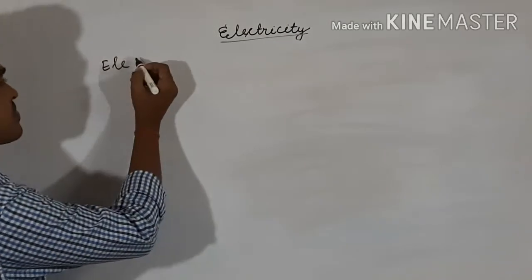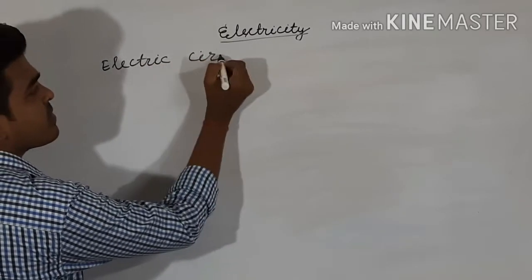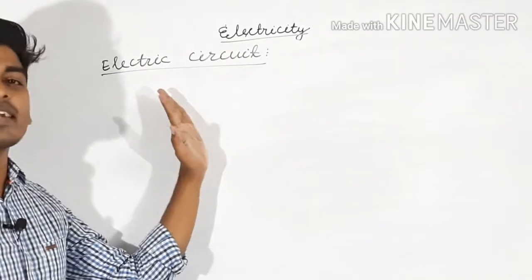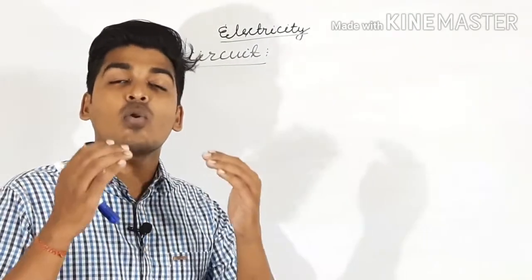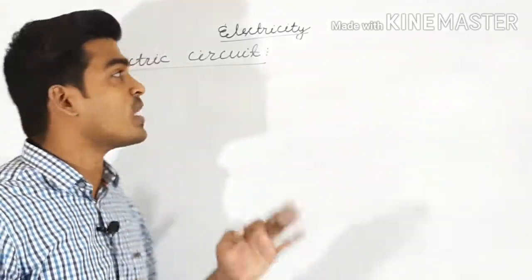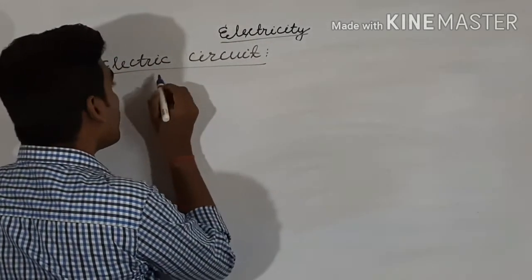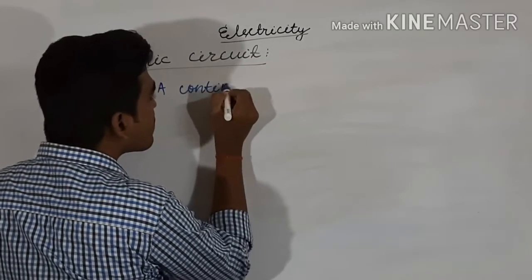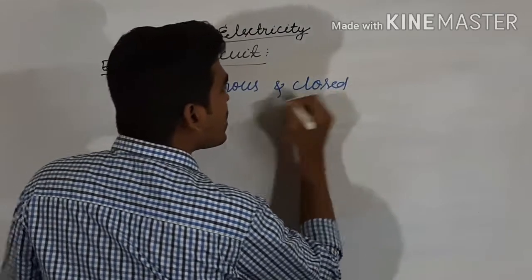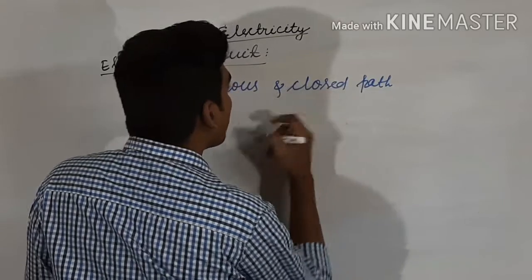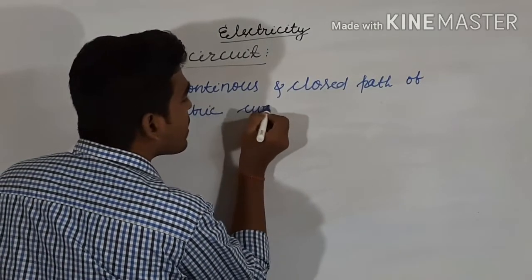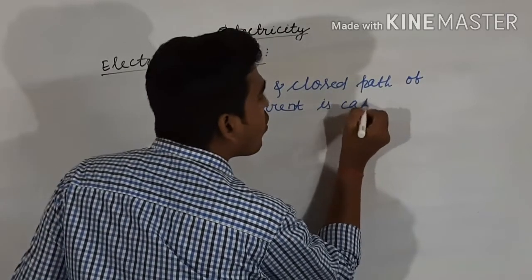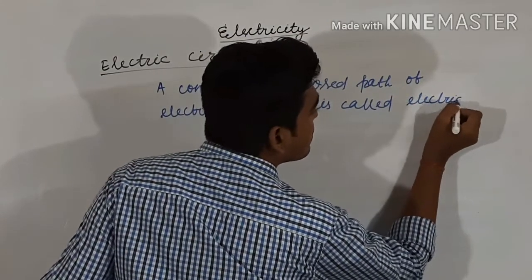The next question is: what is an electric circuit? An electric circuit is defined as a continuous and closed path of electric current. A continuous and closed path through which electric current flows is called an electric circuit.